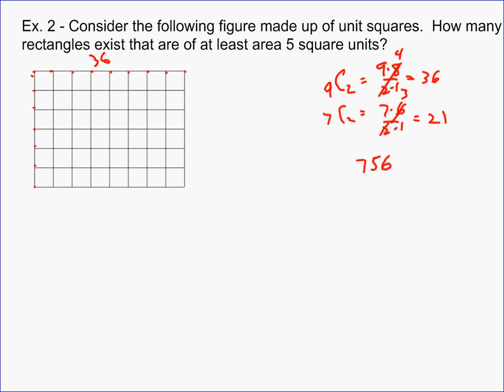We know we actually need fewer than 756, because some rectangles have less than 5 square units. We need to subtract those out. For instance, we can count that there are 48 rectangles that are just 1 by 1. So what we're going to have to do is list out all the possibilities for rectangles with area less than 5.